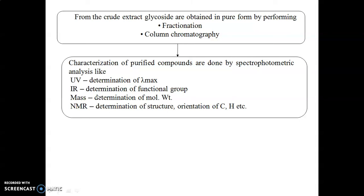Mass spectroscopy is used to determine the molecular weight of the isolated phytoconstituent. NMR analysis is also performed — two types: 13C NMR (carbon NMR) to find out how many carbon atoms are present in the isolated compound, and proton NMR to determine how many protons are present and their positions. By carefully checking all data and comparing with existing literature, characterization is completed.